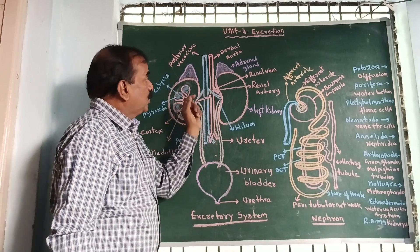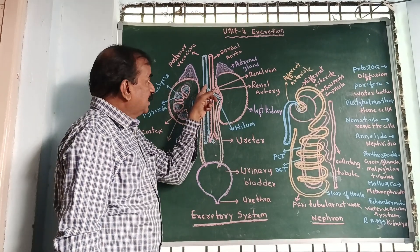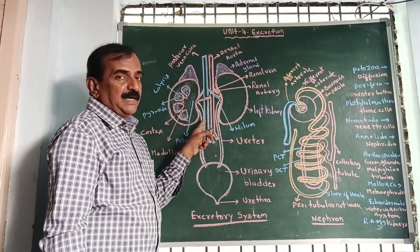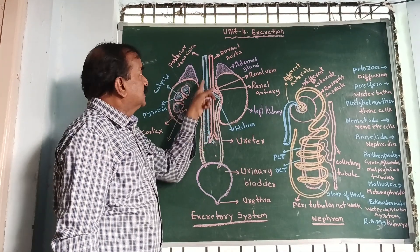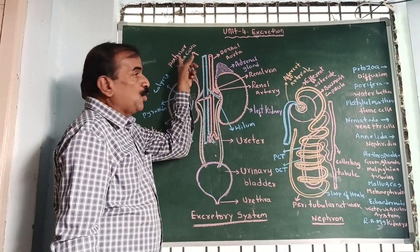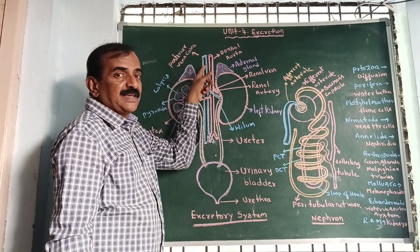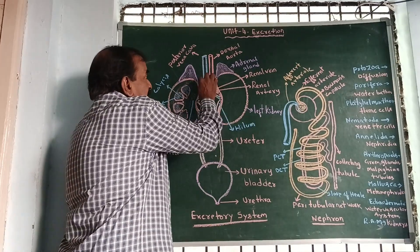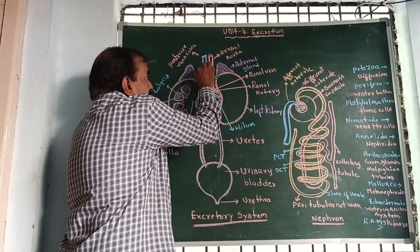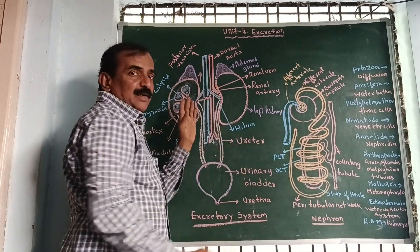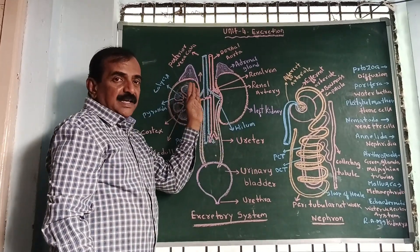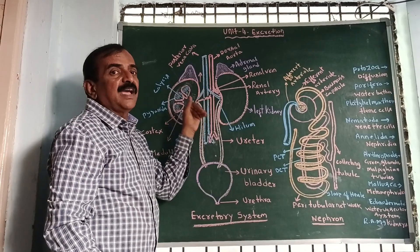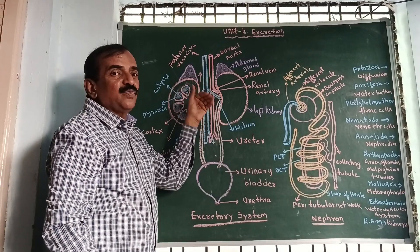Here you are observing a blue colored blood vessel. This is called the posterior venae cava, which carries blood from each kidney, and that blood does not have nitrogenous waste materials.